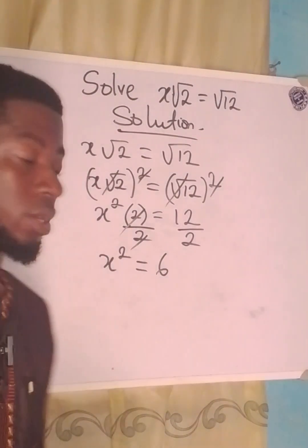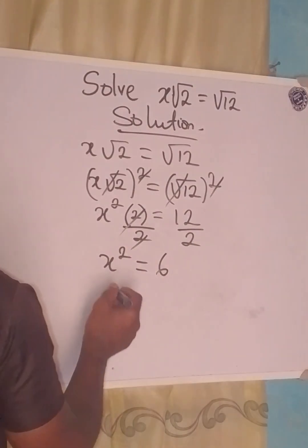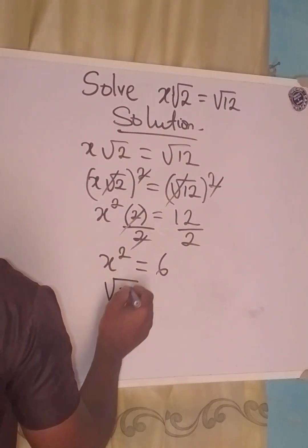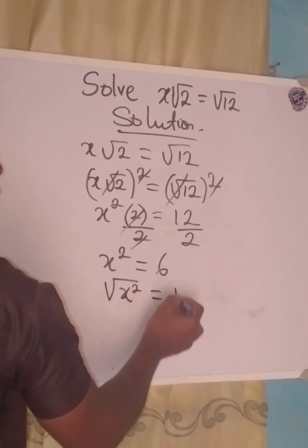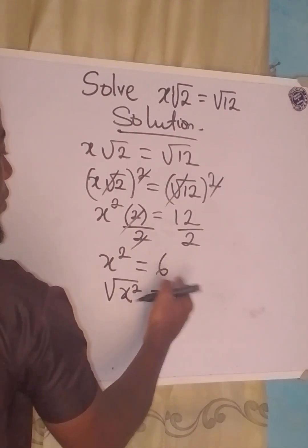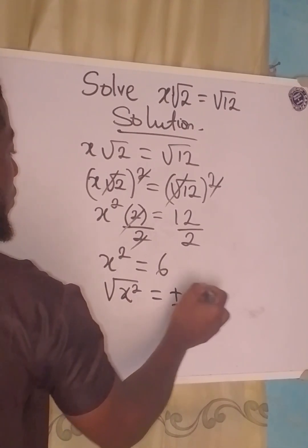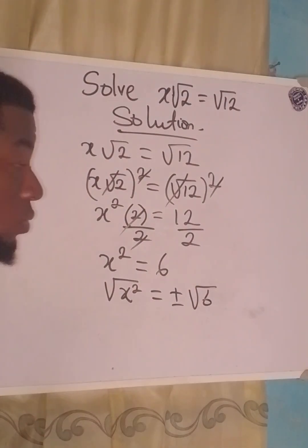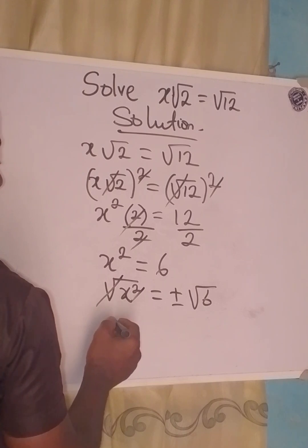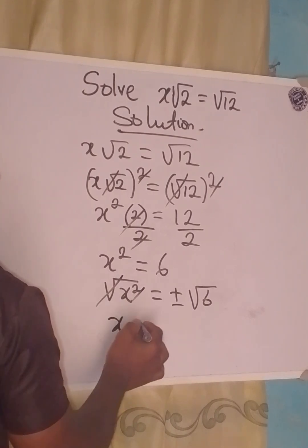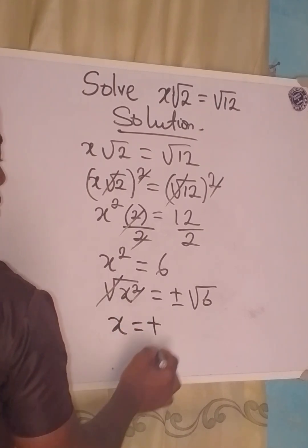So what do we do? We will now square root both sides again. Remember, when you're square rooting both sides, you have plus or minus. The square roots cancel, and now our x is alone and equals ±√6.